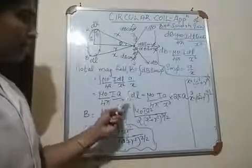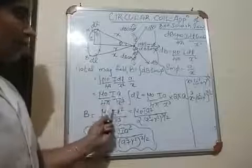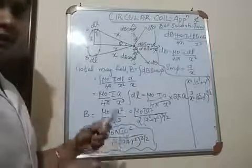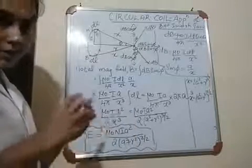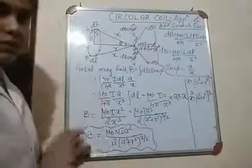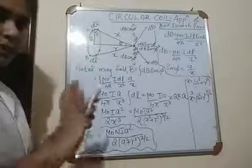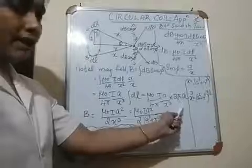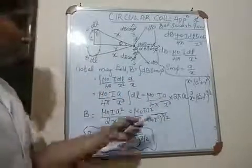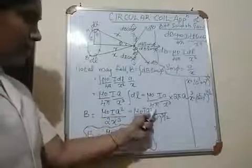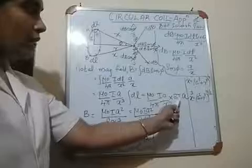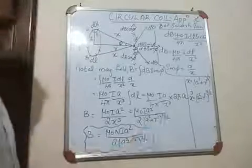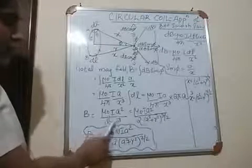All these are constants, so we take them outside the integral: μ₀·I·a / (4π·x³) times the integral of DL. DL is a small segment of the circuit, and when you integrate all the segments you get the circumference, which is 2πa. So the total magnetic field is μ₀/4π · I·a / x³ × 2πa. Here 4π and 2π cancel, giving 2, and a times a is a². So B equals μ₀·I·a² / (2x³).